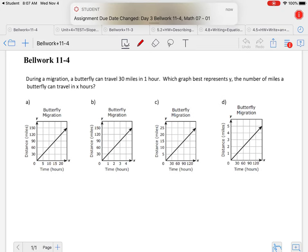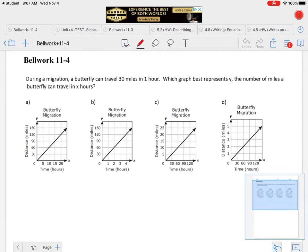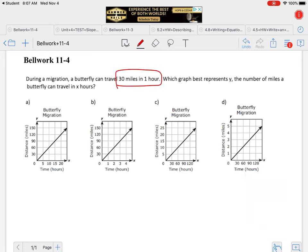Today's bell work is going to give you a situation. It says during a migration a butterfly can travel 30 miles in one hour. Which graph best represents y, the number of miles the butterfly can travel in x hours?